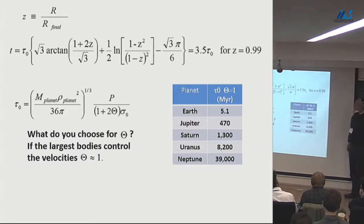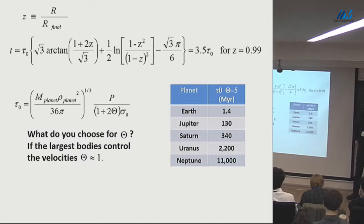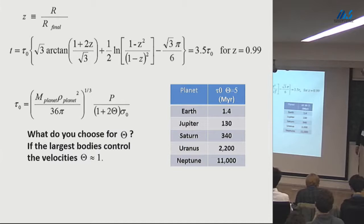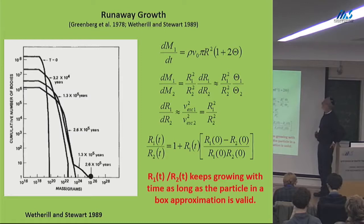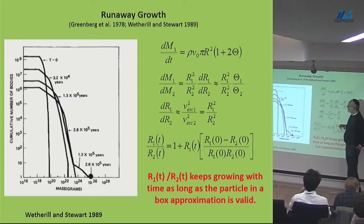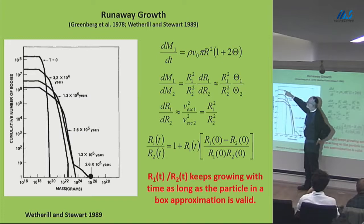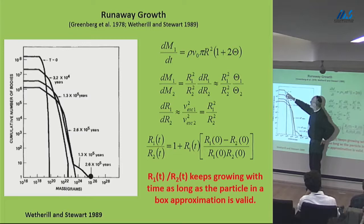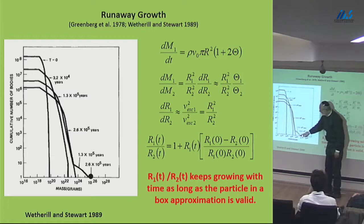If you increase theta to 5, that gives you a factor of a few, but Neptune is still taking longer than the age of the solar system. It turns out that when people did numerical models of many-body problems — Greenberg and colleagues in 1978, Wetherill and Stewart — they found an interesting thing. If you start with a density distribution of planetesimals, they collide and grow, and after a certain amount of time you have one really big body running away from the rest of the distribution. Runaway growth.